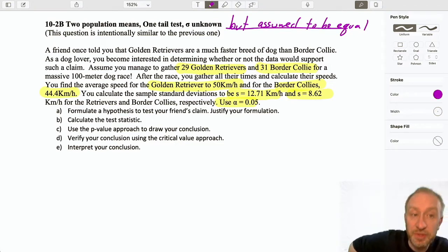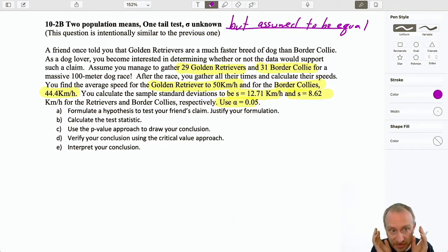So, if you go back, if you have the workbook printed off, go back and look at problem 10-2-A, and you'll see that it is extremely similar. The difference being, problem 10-2-A gave us the time that it took for the dog to complete the 100-meter race. Now, we have the average speed.